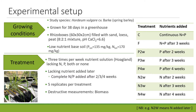We grew spring barley, Hordeum vulgare, in a greenhouse in these rhizoboxes, filled with a very poor soil — a mixture of sand, loess, and peat — resulting in a very low nutrient base. We added nutrients in the form of Hoagland solution, from which we could remove nitrogen, phosphorus, both, or neither. We then added the complete lacking nitrogen or phosphorus after two, three, or four weeks.